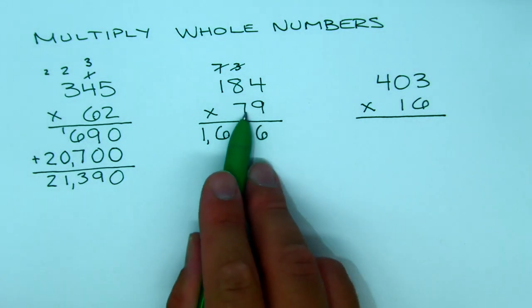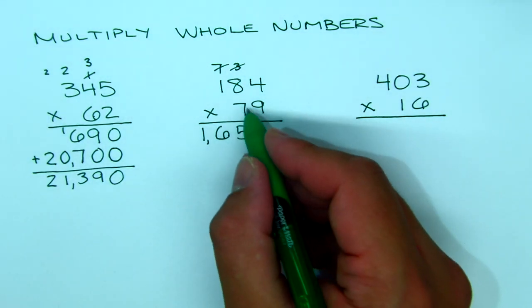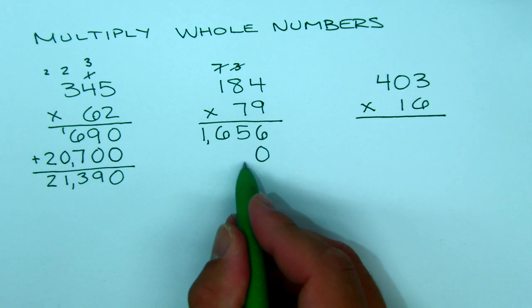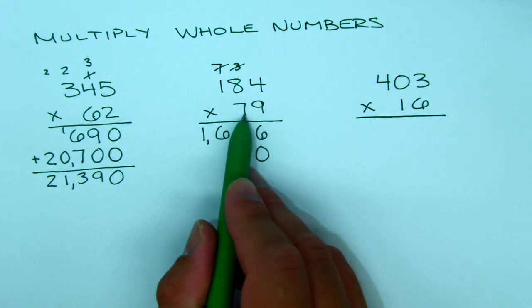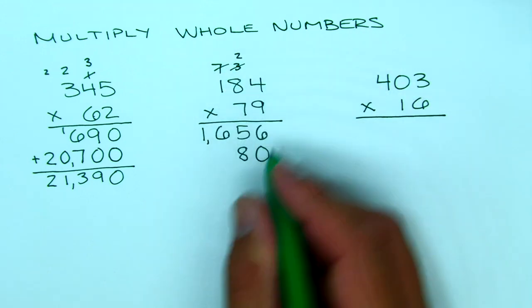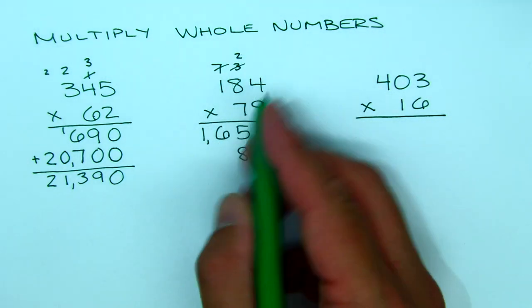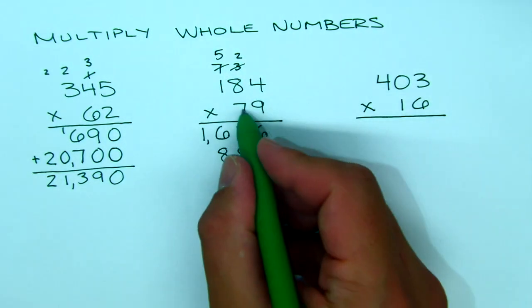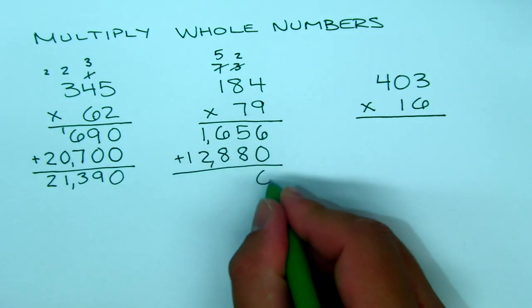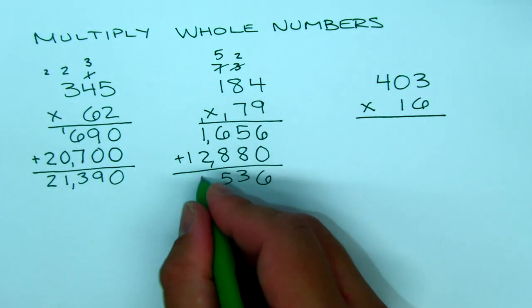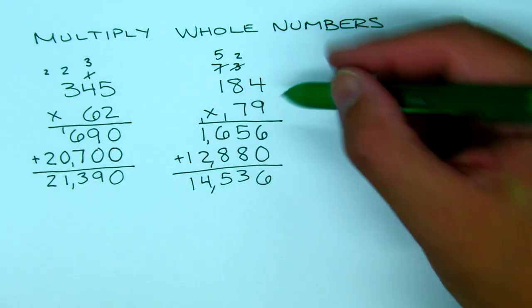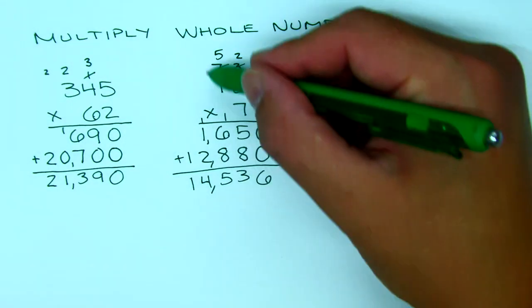We get rid of those carried digits since we've already used them. This 7 is not a 7 — it's a 70 — so we put a 0 here as a placeholder, which bumps everything over one place value and makes that 7 a 70. 7 times 4 is 28: 8 goes down, 2 goes up. 7 times 8 is 56, plus 2 is 58: 8 goes down, 5 goes up. 7 times 1 is 7, plus 5 is 12. Then we add and get 14,536.